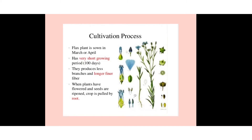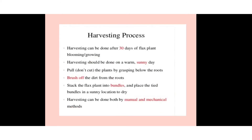In the cultivation process, flax fiber is generally sown in March to April. The growing period is about 100 days. The plants produce fewer branches and longer, thinner fibers. When the plants have flowered and the seeds are ripening, the crop is pulled by the root. Once the flowers and seeds are mature, the plants are not cut but pulled from the root portion.